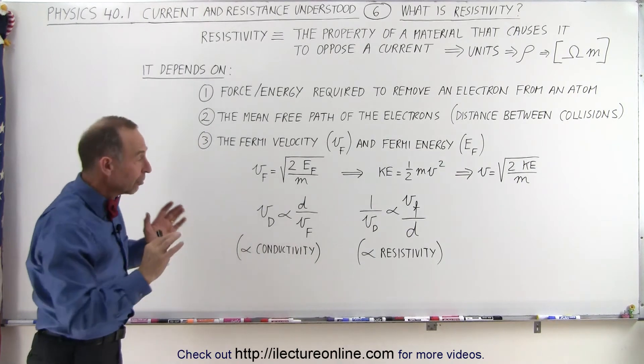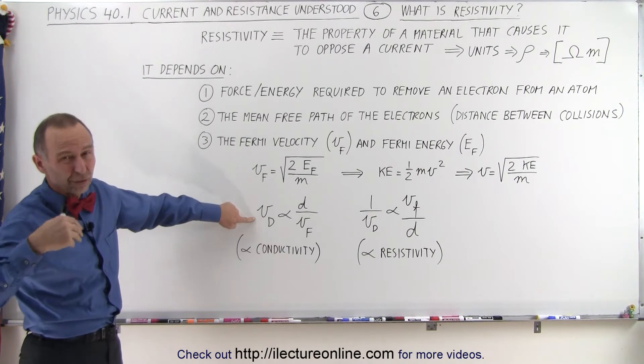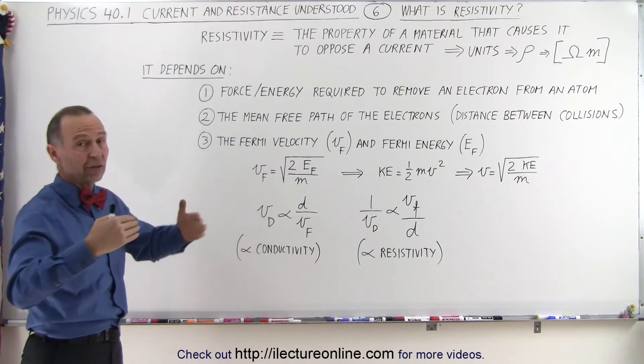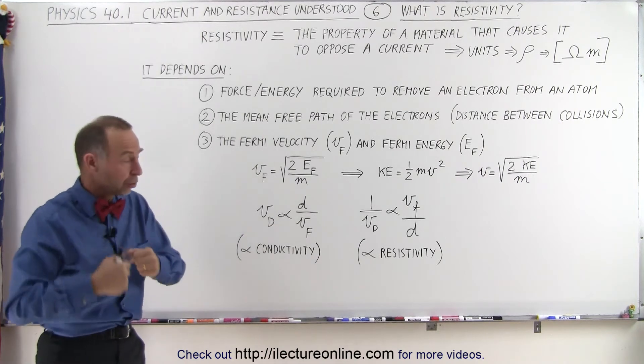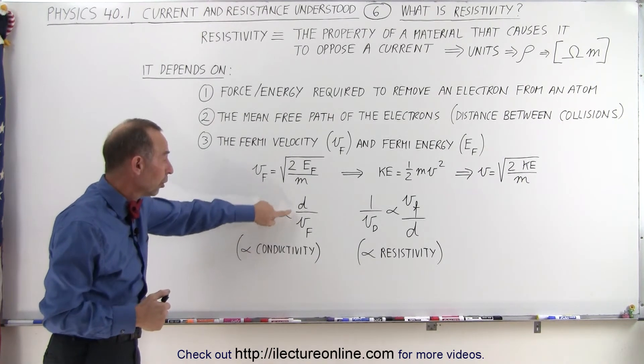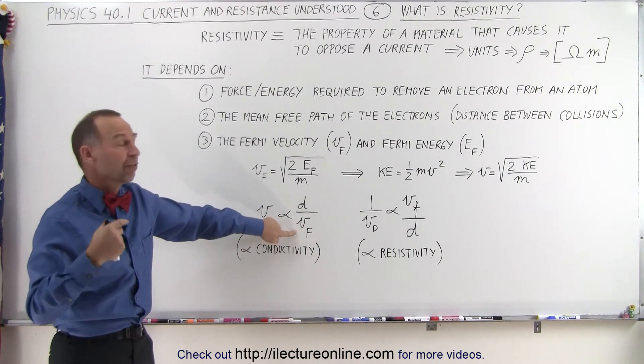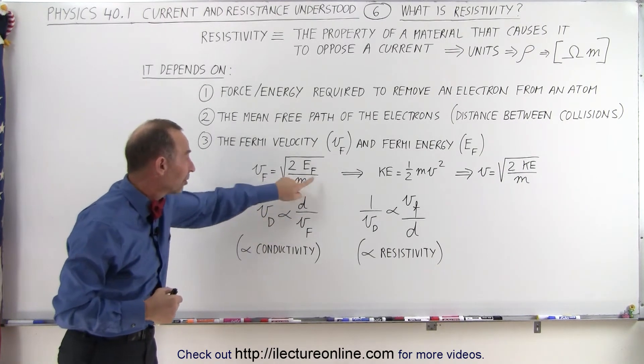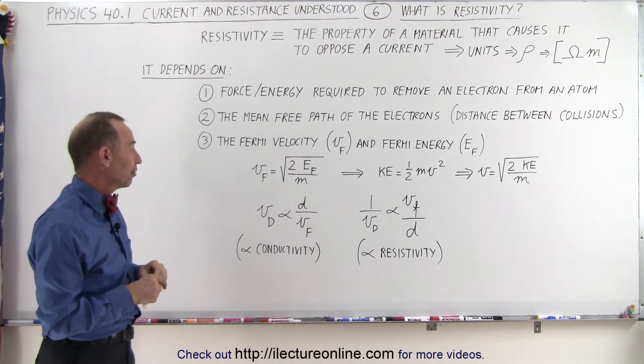Now, it's sufficient to understand at this point that the drift velocity, which of course is related to the current, the greater the drift velocity, the greater the current. The smaller the drift velocity, the less the current. It's proportional to that distance between collisions, the mean free path, divided by the Fermi velocity. Now, of course, the Fermi velocity is related and somewhat proportional to the energy, the Fermi energy.